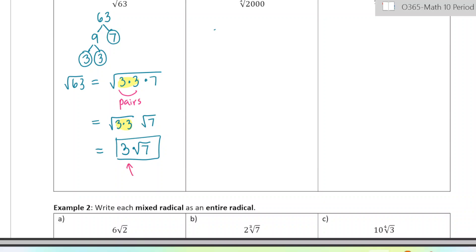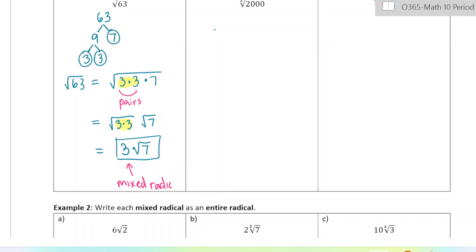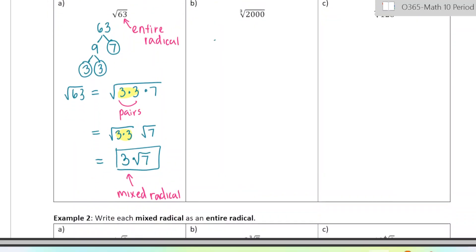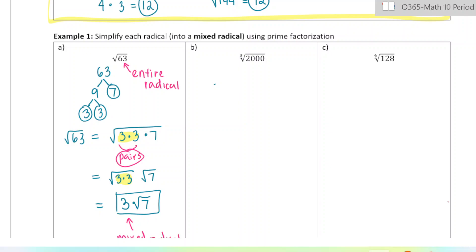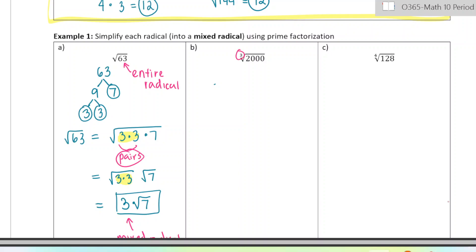This is the mixed radical, and we started with an entire radical where the entire number was written under the square root. Now I'm going to do one more and then I encourage you to do the last one on your own. This time we're going to be doing a cube root. So instead of pairs of numbers, we're going to look for groups of three numbers because we are doing a cube root.